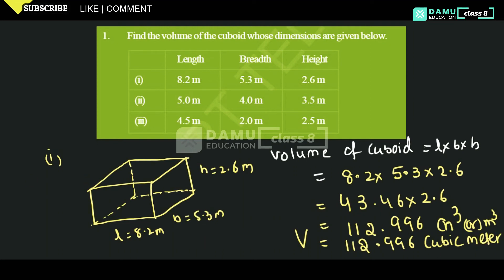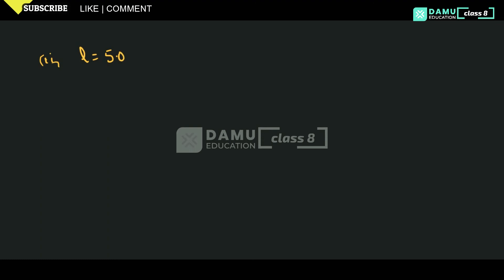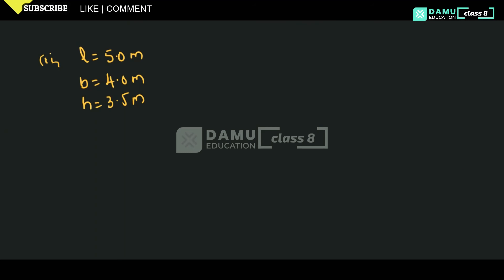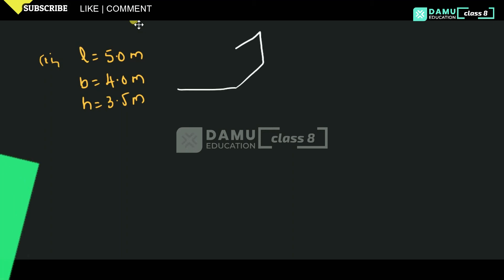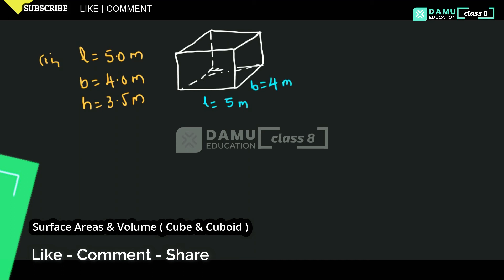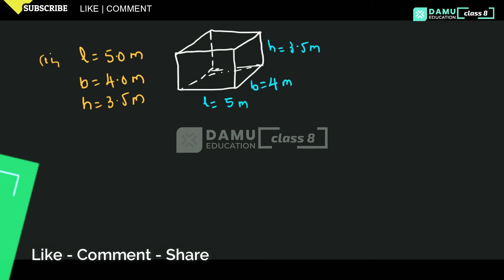Next, the second problem. Length will be 5 meters, breadth will be 4 meters, and height will be 3.5 meters. You can draw the cuboid with length 5, breadth 4, and height 3.5. So L = 5 m, B = 4 m, H = 3.5 m. We need to find the volume.